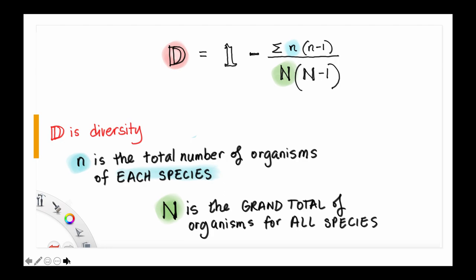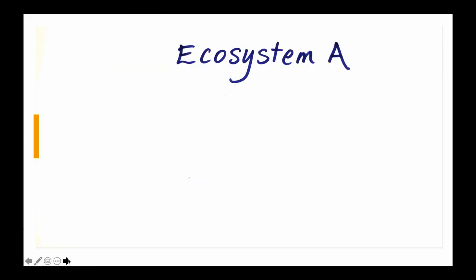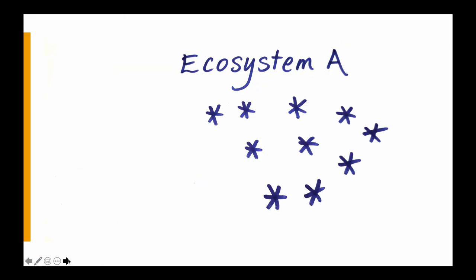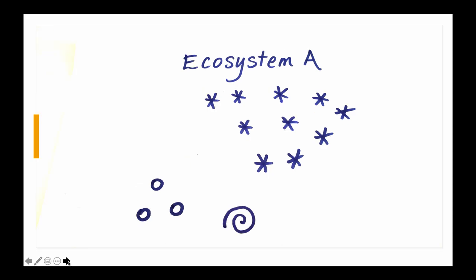This seems like a fairly complicated equation, but I think you'll understand it if we do an example. Let's look at Ecosystem A. Ecosystem A has ten stars, three circles, and one swirl.